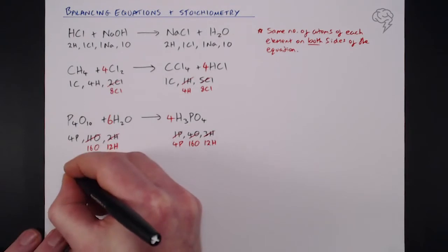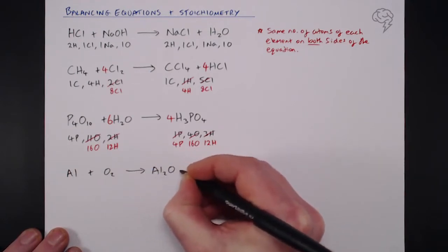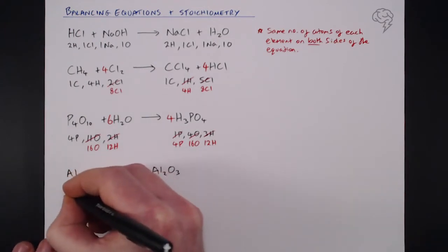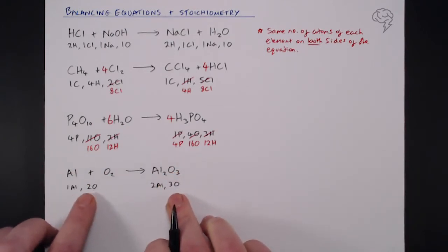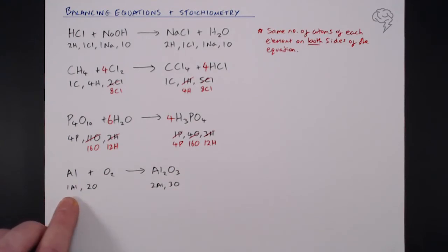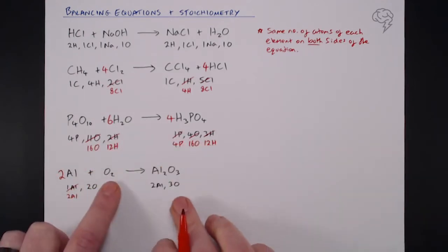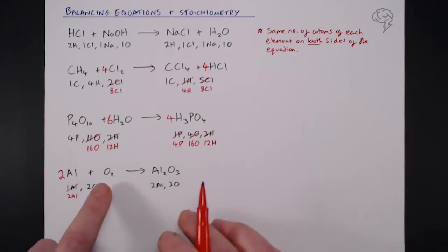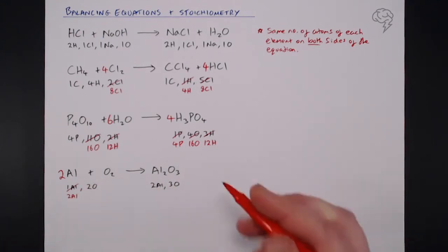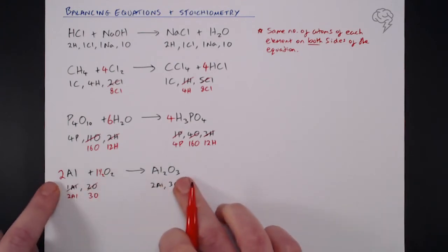One last example: aluminium reacts with oxygen under certain conditions to give aluminium oxide, Al2O3. On the left we have one aluminium and two oxygens; on the right, two aluminium and three oxygens. I multiply aluminium by two to get 2Al on the left. For oxygen, two into three doesn't go evenly, so I use 1.5 — giving 1.5 O2, which is three oxygens. The equation is balanced.